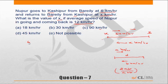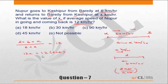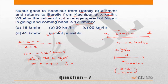Applying the formula: 2 into 6 into x upon 6 plus x should equal 12, which means 12x upon 6 plus x equals 12. Taking 6 plus x to the other side, 12x gets cancelled on both sides, giving 0 equals 72. This situation is not possible — there is inconsistency in the data. An average speed of 12 kilometers per hour is not possible if the onward speed is 6 kilometers per hour.